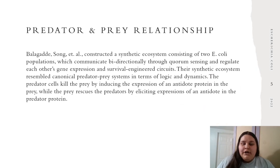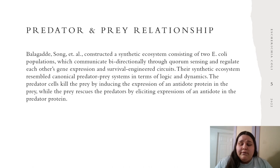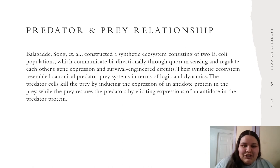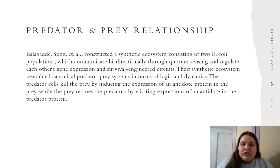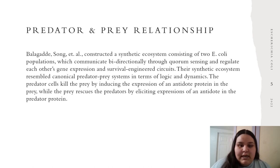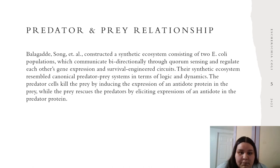I didn't find much predator-prey relationship research for E. coli, but I did find a research experiment conducted by some researchers and scientists. In this experiment, they constructed a synthetic ecosystem consisting of two E. coli populations which communicate bi-directionally through quorum sensing and regulate each other's gene expression and survival via engineered circuits. This synthetic ecosystem resembled canonical predator-prey systems in terms of logic and dynamics. The predator killed the prey by inducing the expression of an antidote protein in the prey, while the prey rescues the predator by eliciting expression of an antidote protein in the predator.